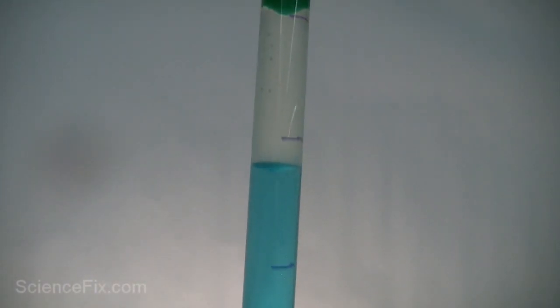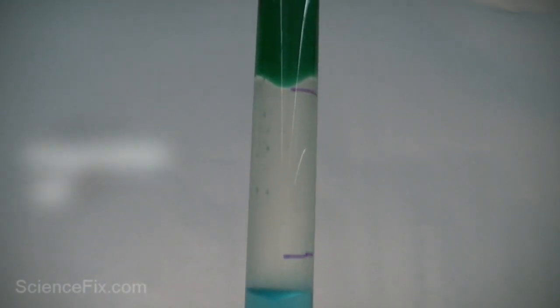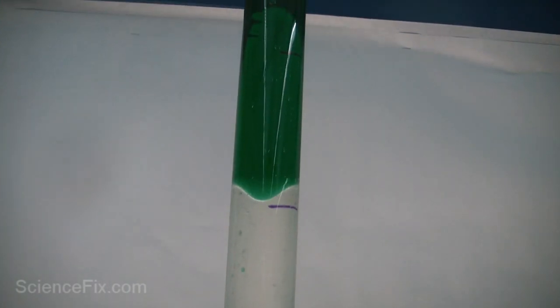Above water, less dense than water, is vegetable oil. And then the least dense liquid at the top is isopropyl alcohol.